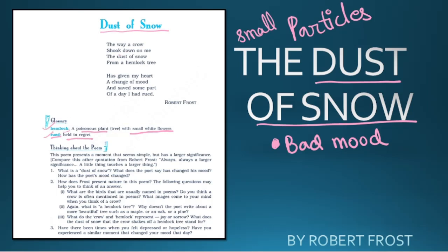Now the first stanza: 'The way a crow shook down on me the dust of snow from a hemlock tree.' There was a crow on a hemlock tree — 'shook down' means due to the movement of the crow, some part of snow fell on the poet. 'Me' here refers to the poet. So the poet was moving forward and there was a crow on a hemlock tree, and due to its movement small particles of snow fell on the poet.